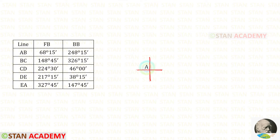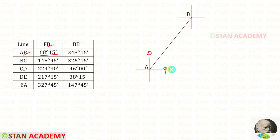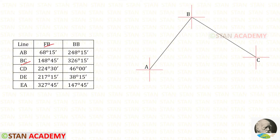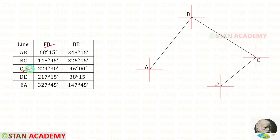Let us draw the direction symbol and keep this station as A. The forebearing of AB is 68 degrees 15 minutes. Since 68 comes between 0 and 90, we draw a line in between and add the direction symbol. The forebearing of BC is 148 degrees 45 minutes. Since 148 comes between 90 and 180, we draw a line in between and add the direction symbol.